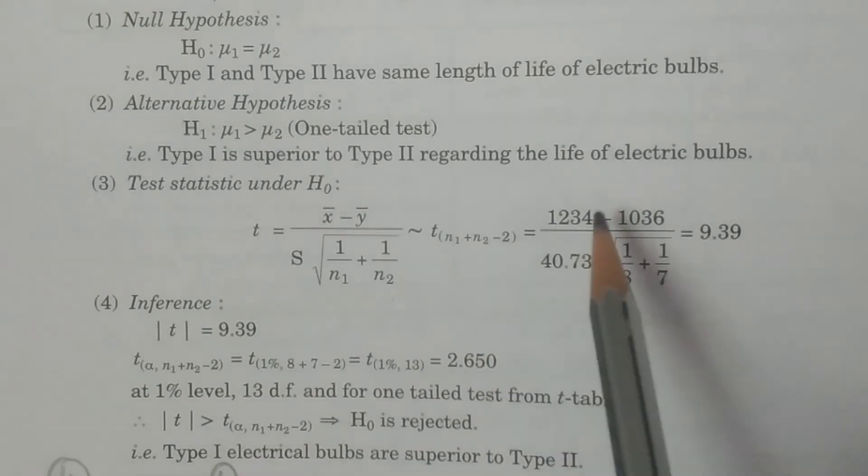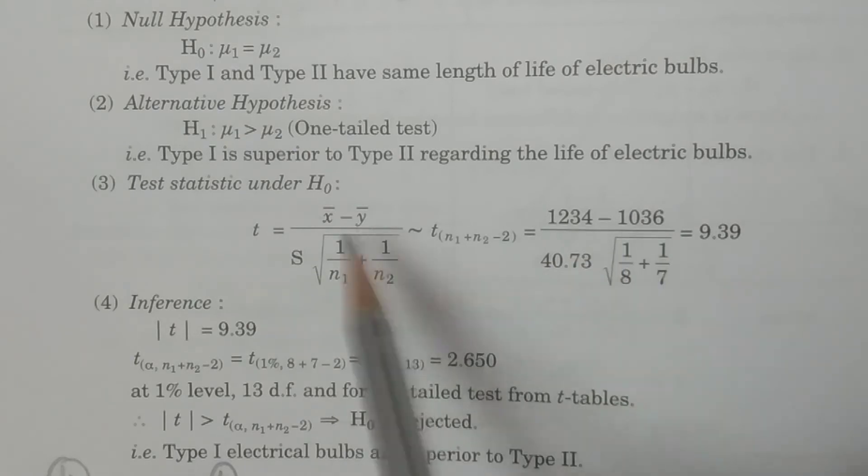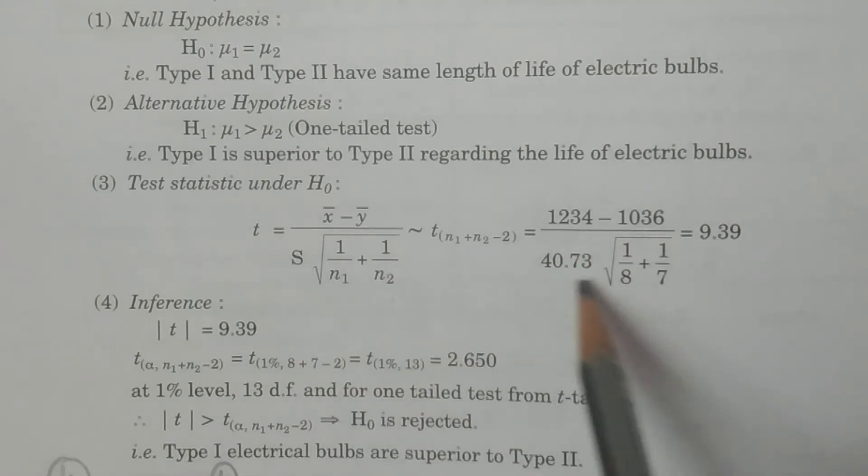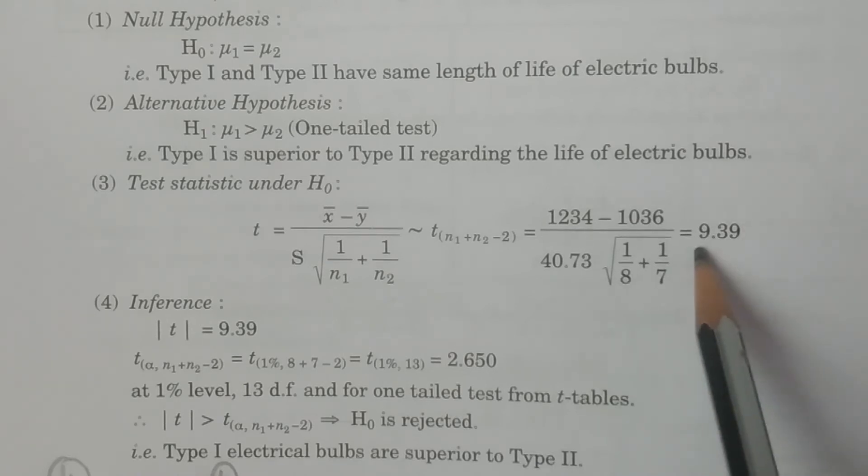That is, it is 1234 x̄ minus ȳ 1036 divided by S 40.73 multiplied by square root of 1 by n1, 1 by 8 plus 1 by n2, 1 by 7, is equivalent to some 9.39.